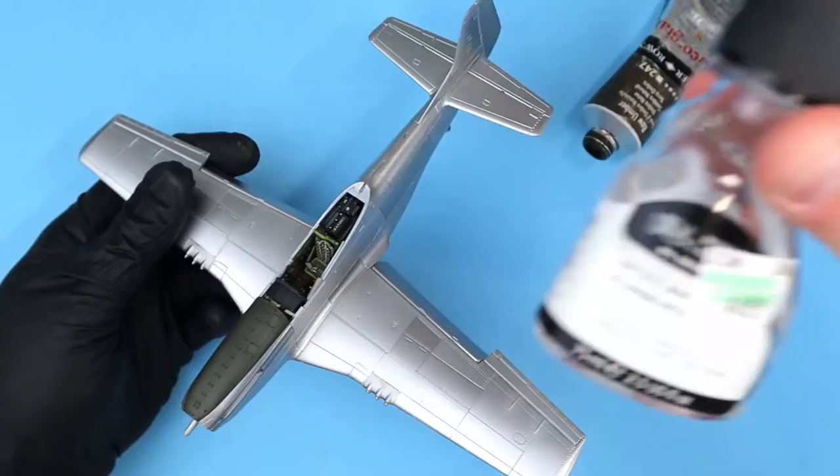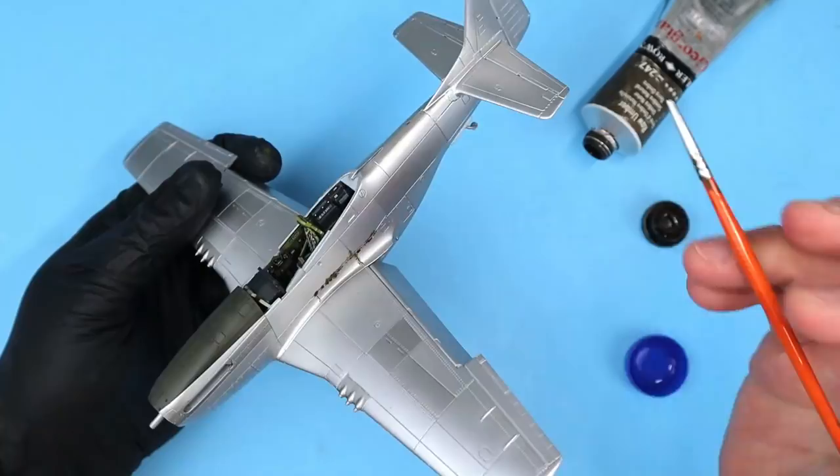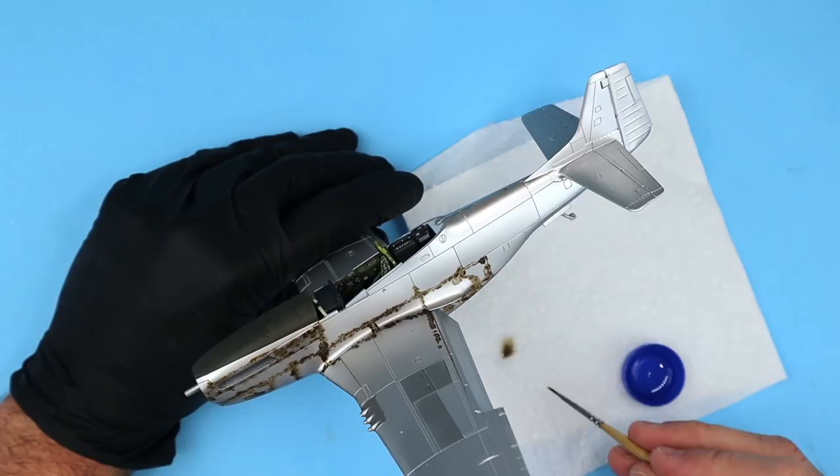To add a little initial weathering to the finish I first applied a light coat of acrylic semi-gloss. I then came back in and used oil paints applied over a coat of white spirits in the same way I had done in the cockpit.